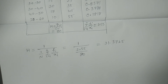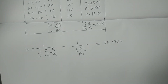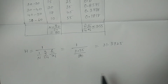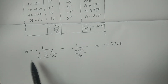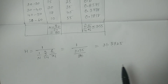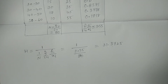I hope you understand. The harmonic mean for this grouped frequency distribution data is H = 31.3725. This is the way to calculate harmonic mean for both grouped and ungrouped data. Thank you.